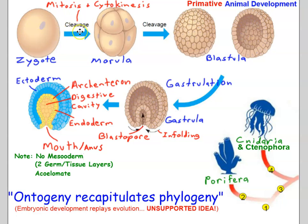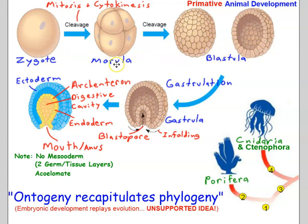As I describe animal embryonic development, keep in mind the scenario from the previous slide. We start with a zygote — a fertilized egg — which undergoes cleavage, meaning mitosis and cytokinesis. That gives us a morula, a solid ball of cells, matching species 1 from the previous slide. The morula continues to divide and becomes a blastula, a hollow ball of cells — matching species 2. Then that hollow ball starts to in-fold at one end.